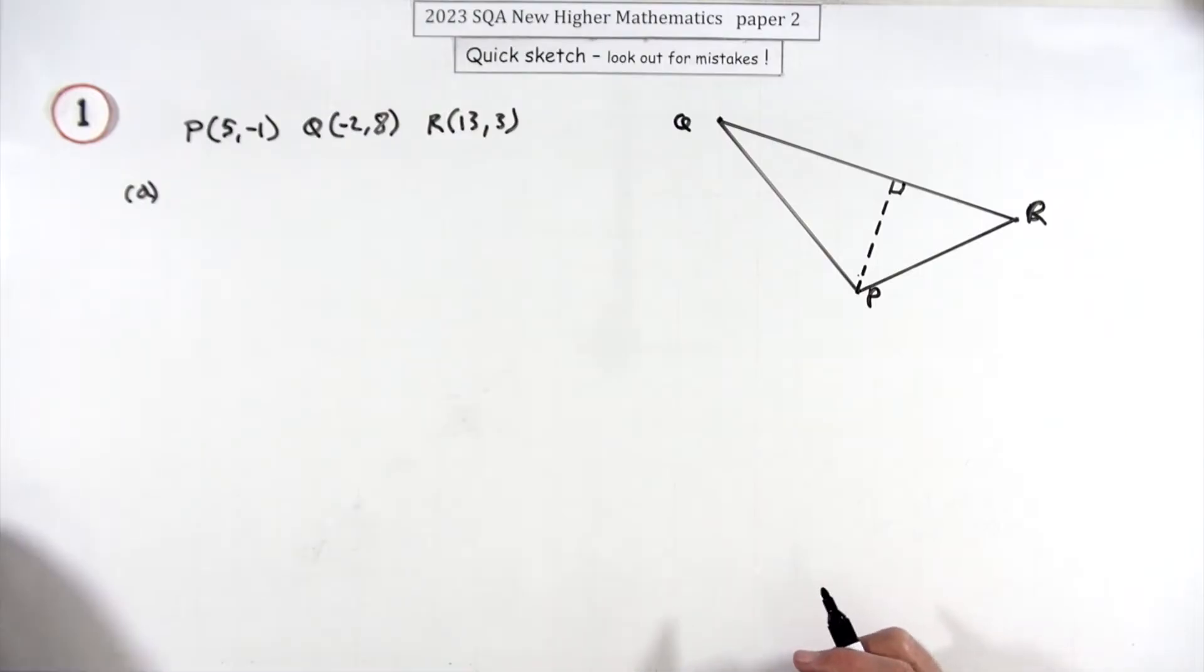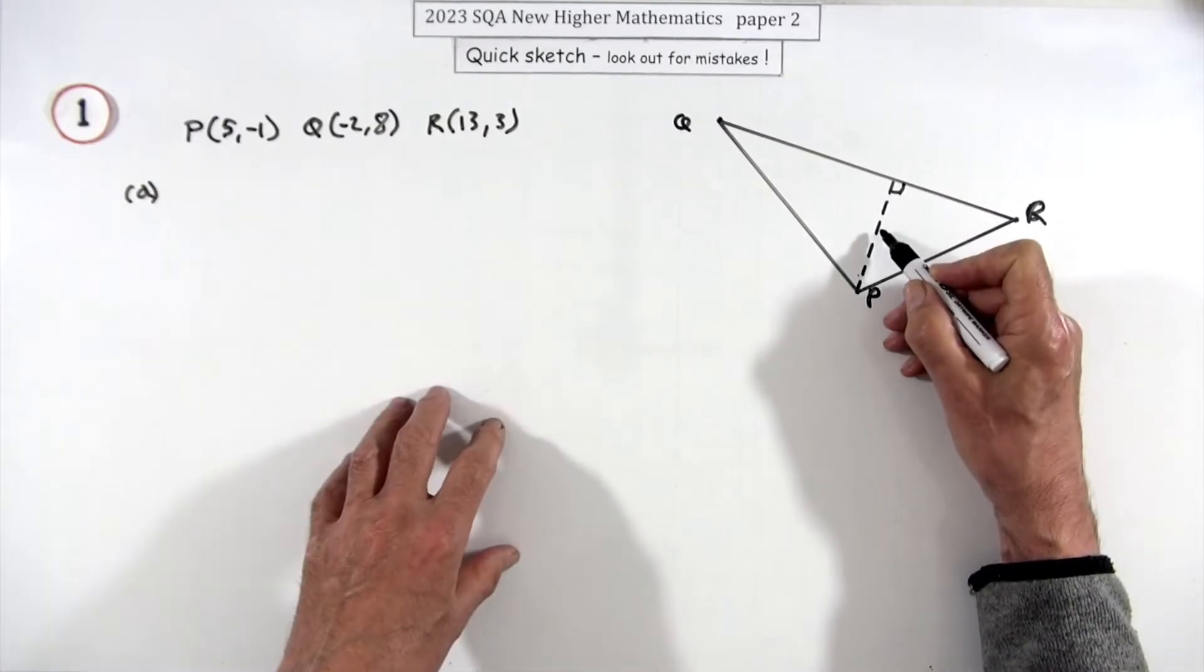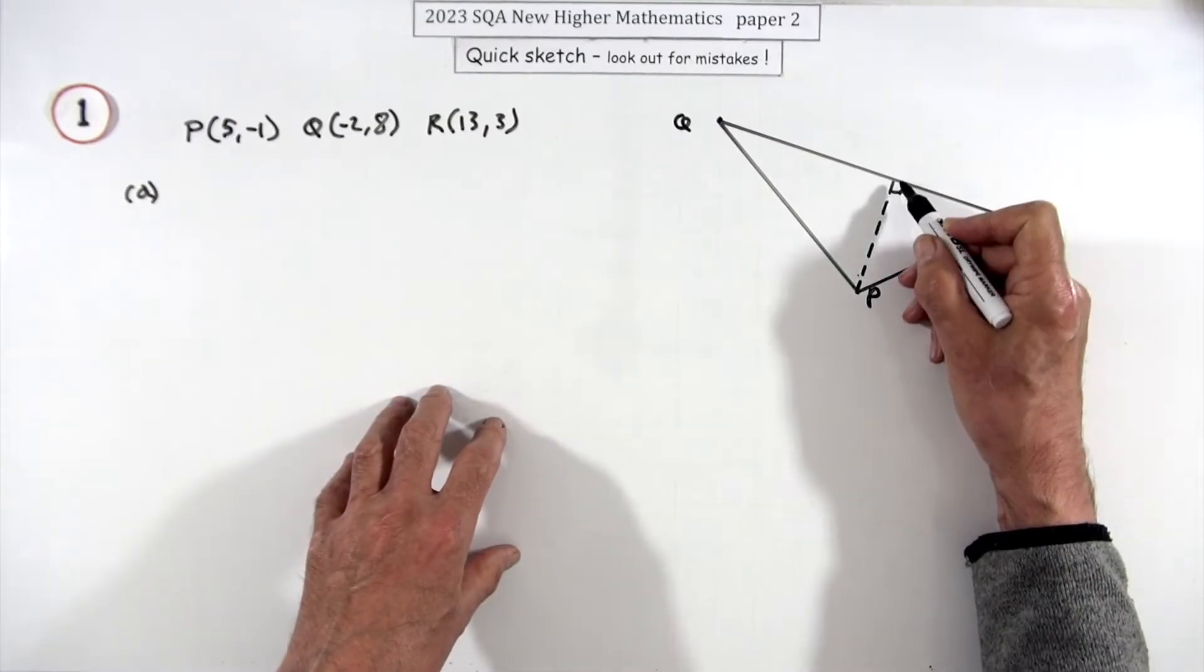Three marks just for doing that. So it's an equation of a line. You need a point on it. Well, I've got that, so I just need its gradient. Now to get its gradient, I don't have another point, but you've got the line QR.